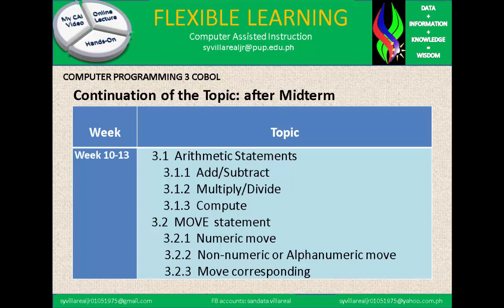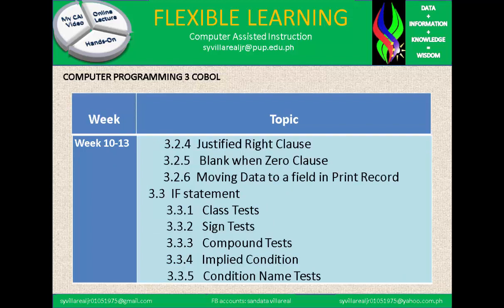We need to move the non-numeric and the corresponding. Next, in week 10.13, we have the justified right clause and the blank when zero clause, and moving data to a field in print record. Next, we have the if statement. Under the if statement, we have 5 subtopics: class test, sign test, compound test, implied condition, and condition name test.